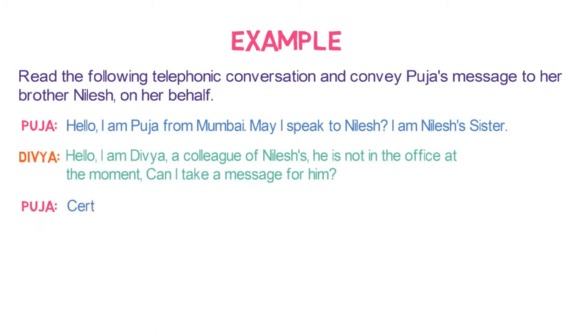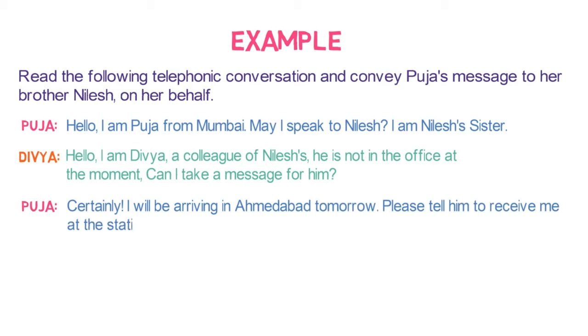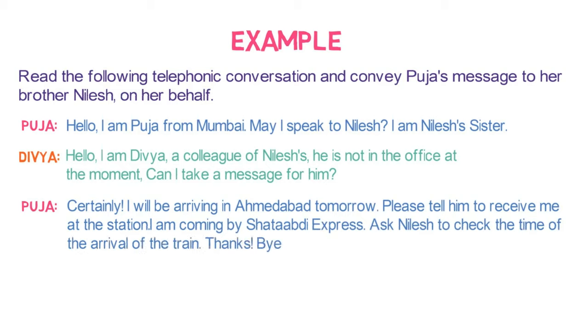Puja: Certainly, I will be arriving in Ahmedabad tomorrow. Please tell him to receive me at the station. I am coming by Shatabdi Express. Ask Nilesh to check the time of the arrival of the train. Thanks. Bye. Divya: Bye, Puja. I will certainly convey your message.